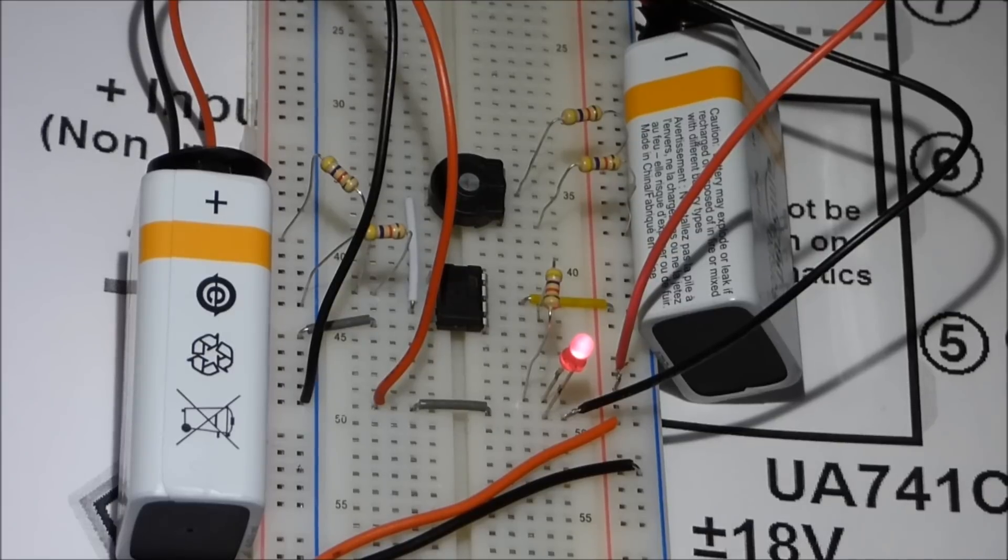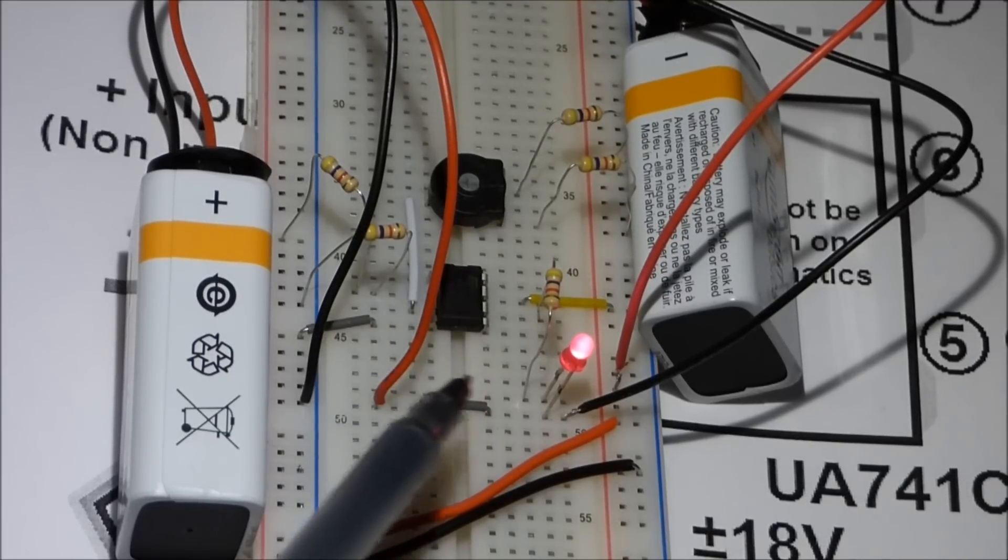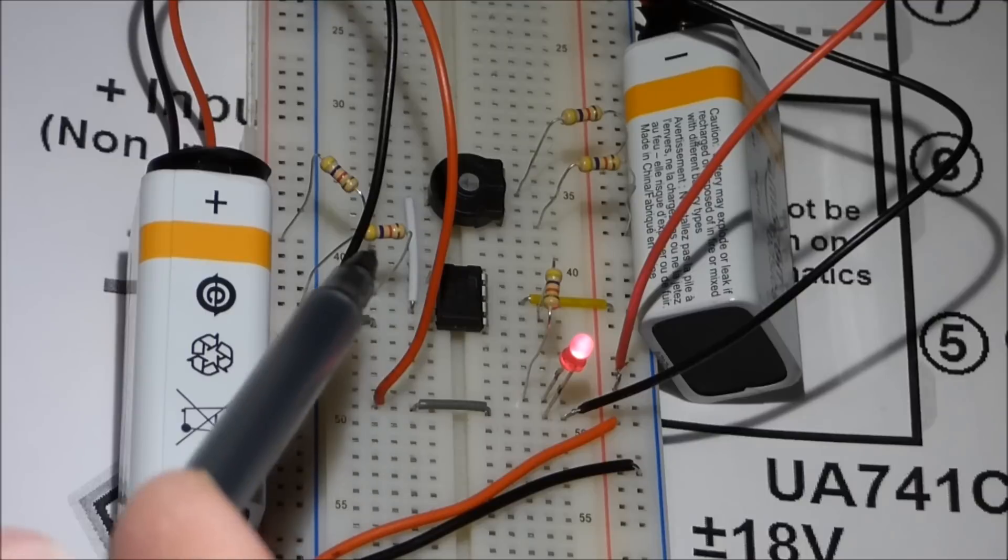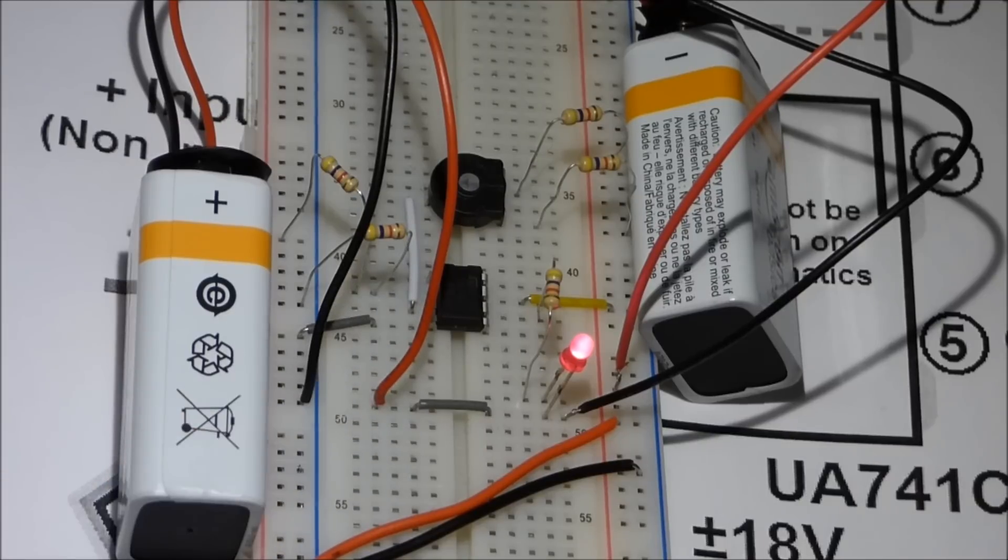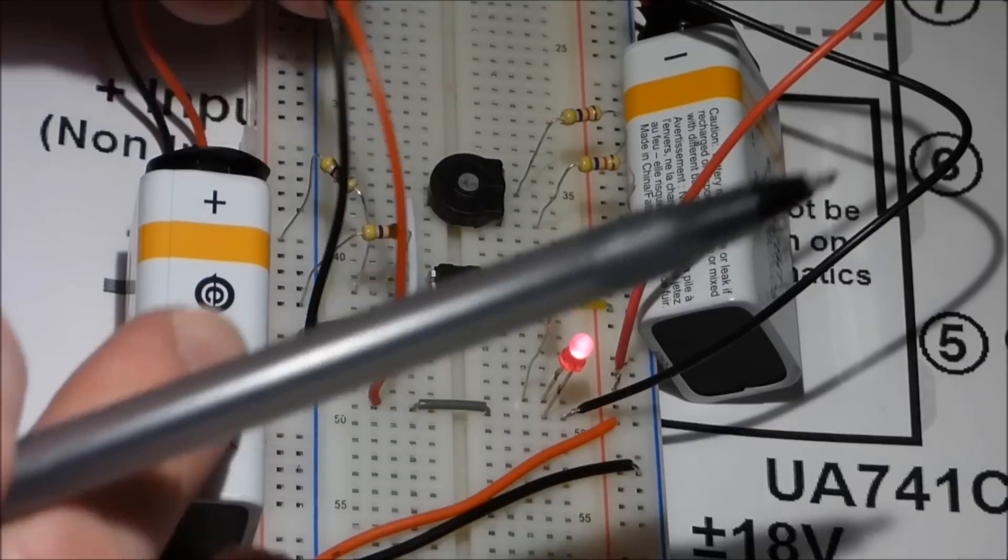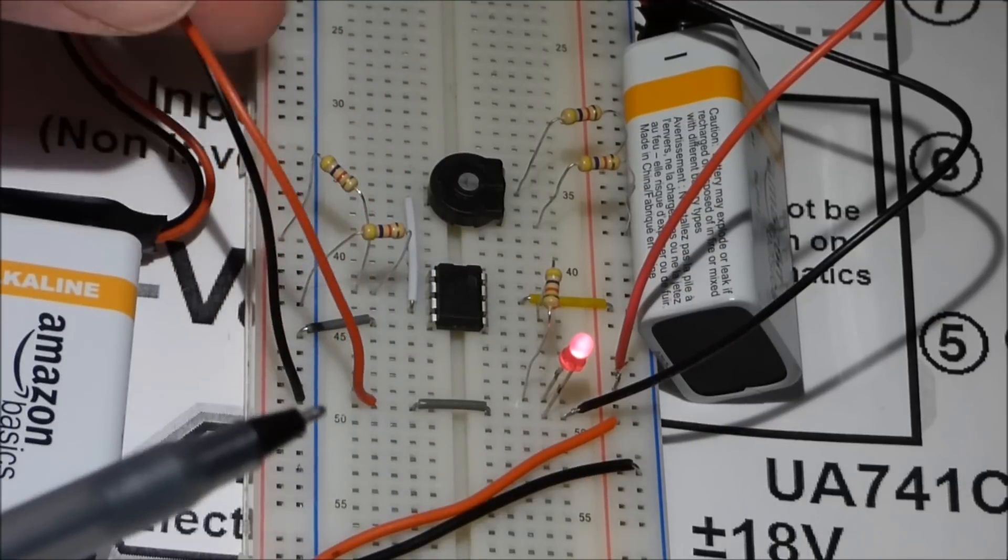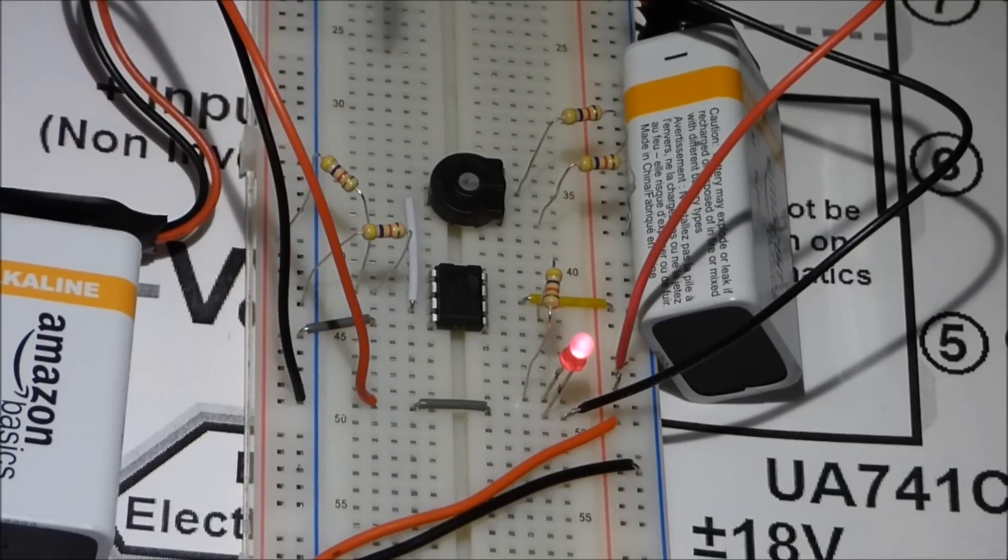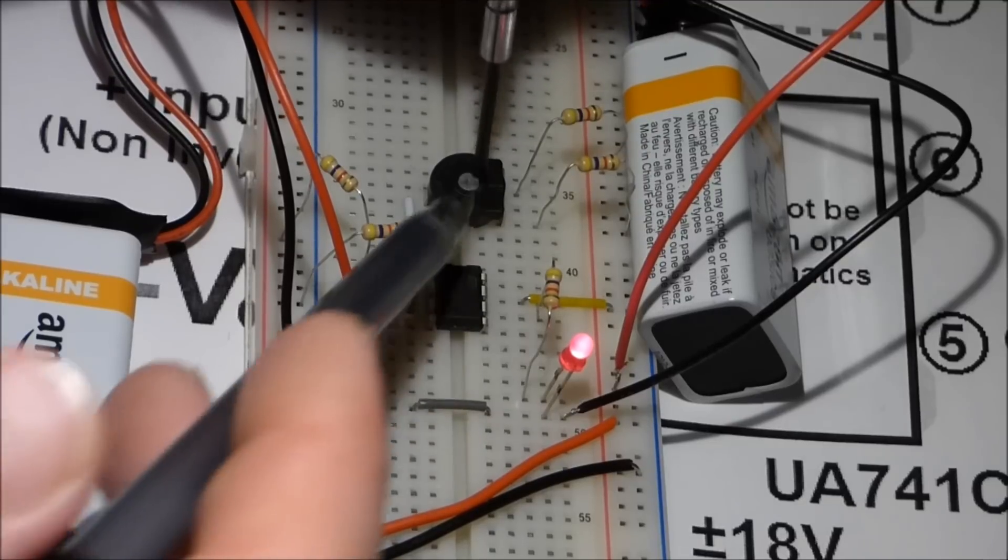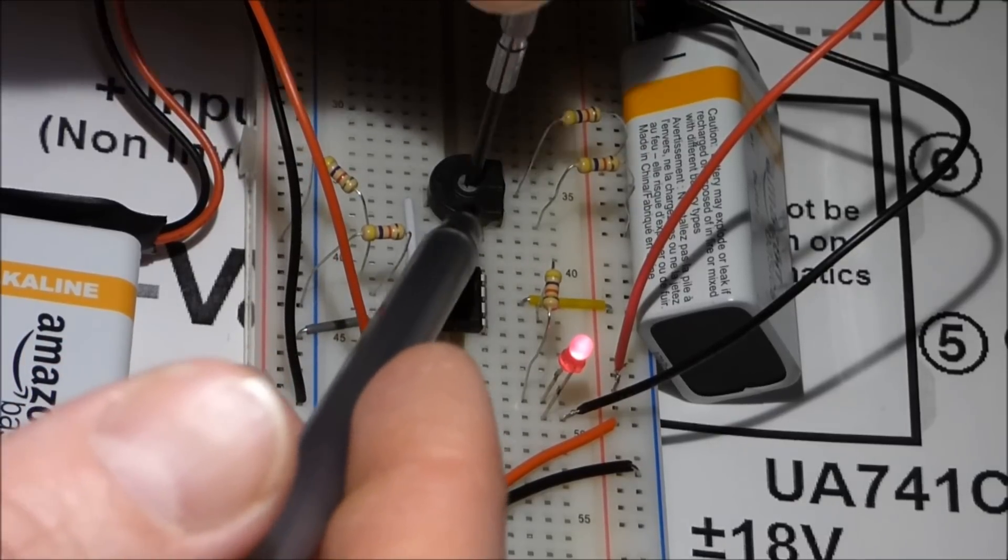So now, for the point of this circuit, as I said, this is a comparator. We got two pins, pin 2 and pin 3, and they both have voltage dividers headed to them. So this one that I'm about to adjust heads to pin 3.